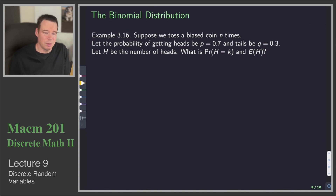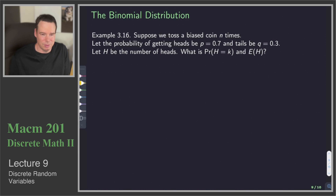Whereas in the geometric distribution, we were rolling the die until a success happened. We had no idea how long we had to roll until a success happened. That's why we had to consider infinitely long sequences — a success could happen after a million rolls, two billion rolls, a quadrillion rolls. We don't know how many rolls it would take to produce a six, so we needed to consider all infinitely many long sequences in our sample space. But here, we've got a fixed number of tosses — n tosses — and we want to know how many of those tosses are going to be successes.